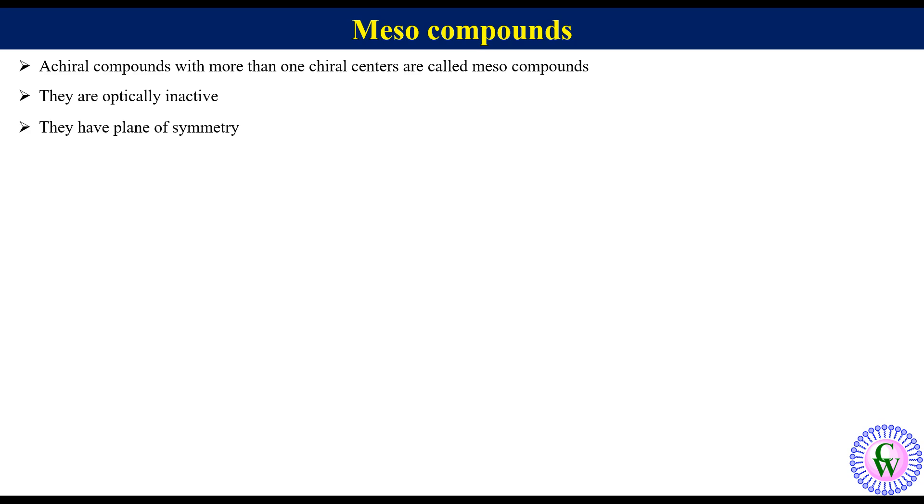They have plane of symmetry, for example meso-tartaric acid. In this molecule we can see that there are two chiral centers and this is the plane of symmetry, so this is a meso compound.